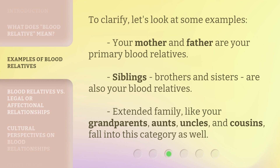To clarify, let's look at some examples. Your mother and father are your primary blood relatives. Siblings — brothers and sisters — are also your blood relatives. Extended family, like your grandparents, aunts, uncles, and cousins, fall into this category as well.